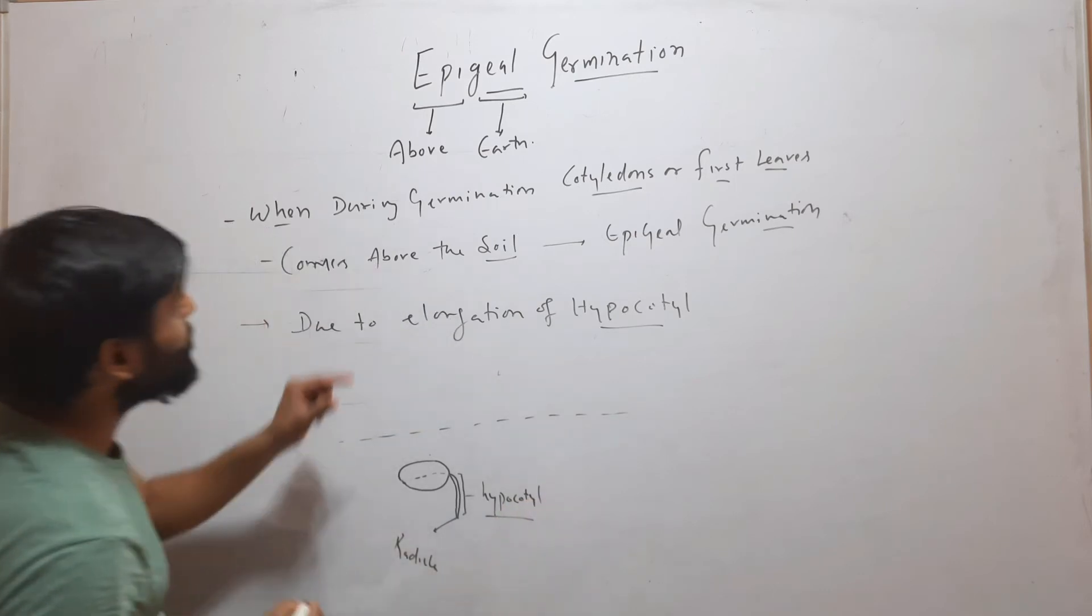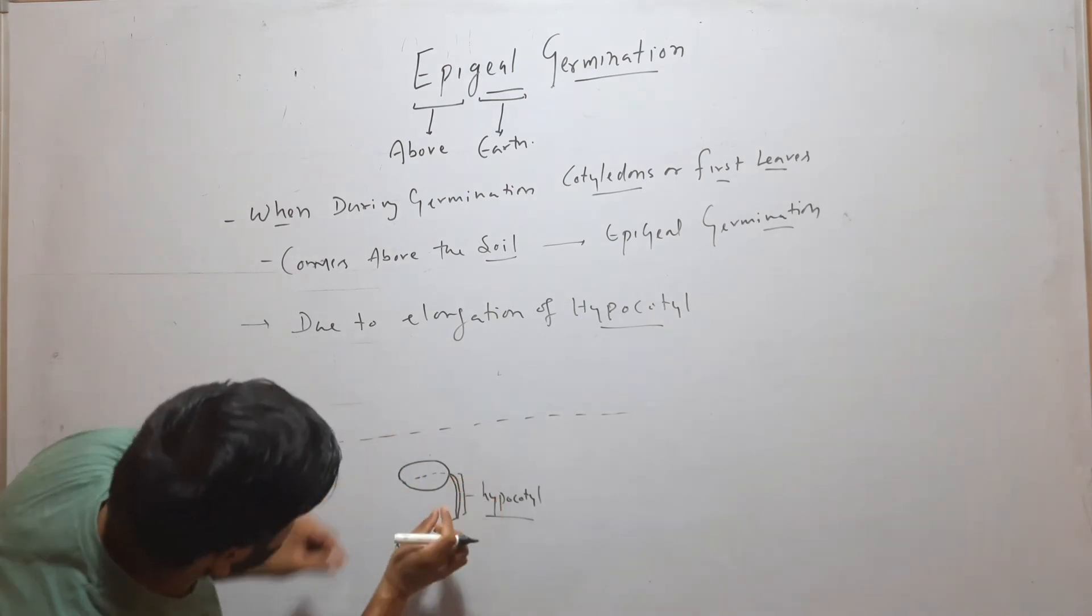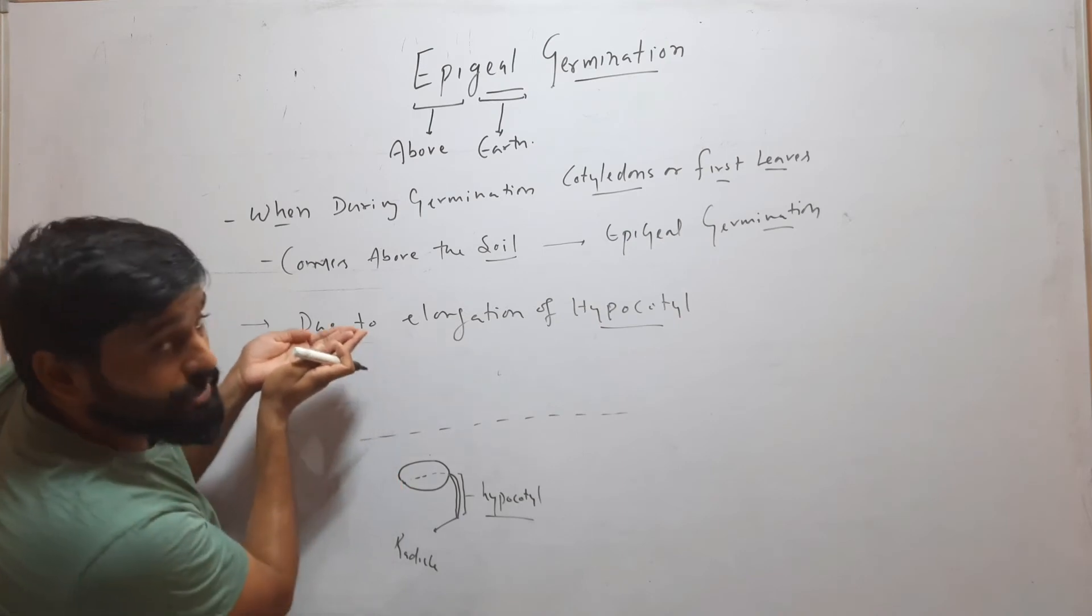During epigeal germination, this part of seed will elongate. When it elongates, it will take the cotyledons above the soil.